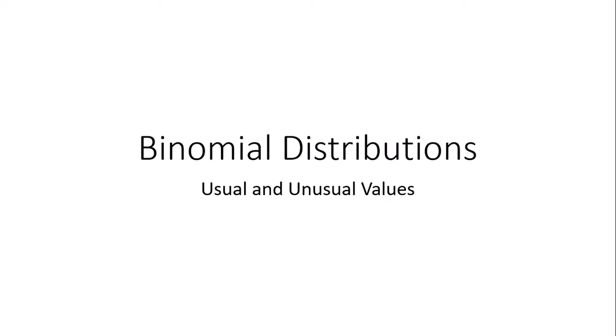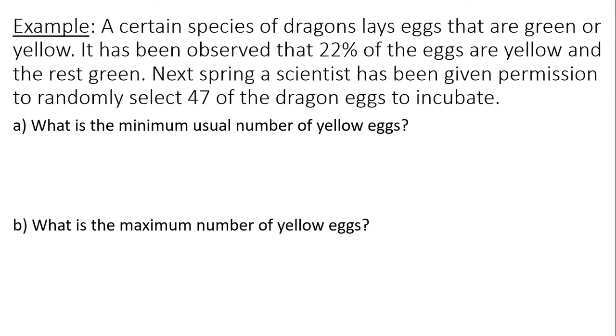This is an example on how to find the usual and unusual values of a binomial experiment or binomial distribution. A certain species of dragons lays eggs that are green or yellow. It has been observed that 22% of the eggs are yellow and the rest green.